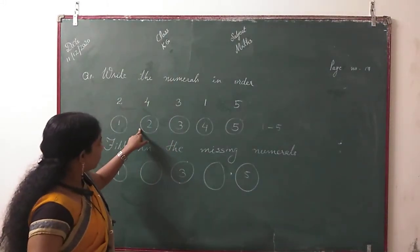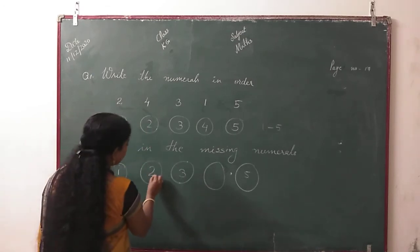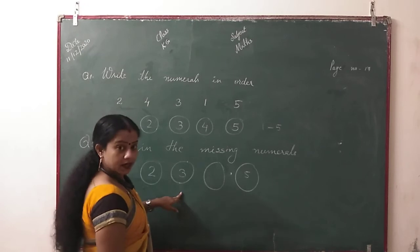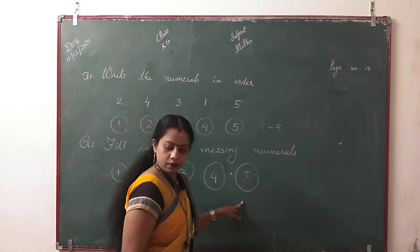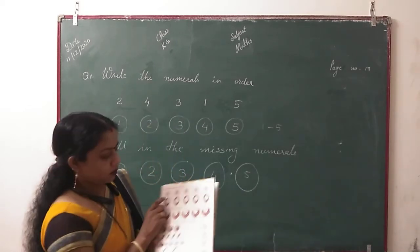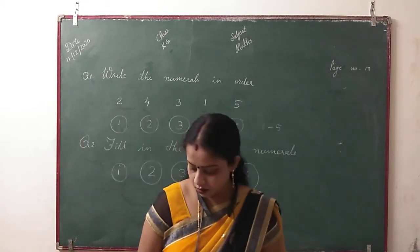You have to write what is missing. One ke baad kya missing hai? Two. One ke baad kya aayega? Two. Us ke baad three. Three ke baad kya missing hai? Four. Us ke baad five aapko diya hua hai. Your first and second question complete. Do it in your book.